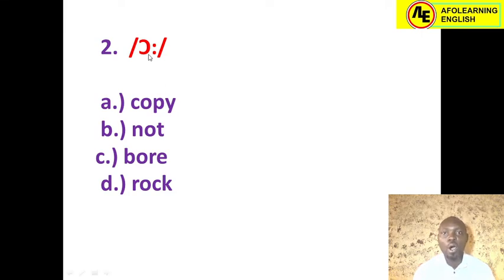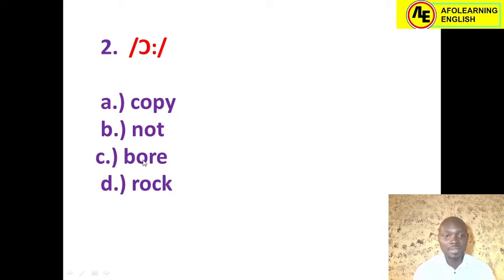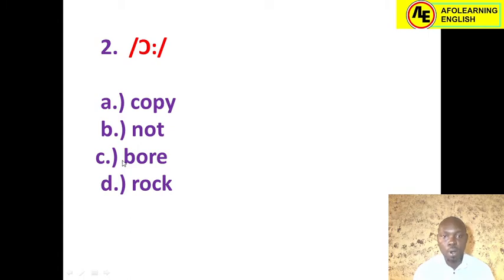Number two: the phonetic symbol is the long /ɔː/. Option A is 'copy' — contains short /ɒ/, not long /ɔː/. Option C is 'ball' — yes, this is already the answer. Words ending in -ORE like 'more,' 'tall,' and 'law' all contain the long /ɔː/. Option D is 'rock' — also short /ɒ/. So the correct answer is option C: ball.